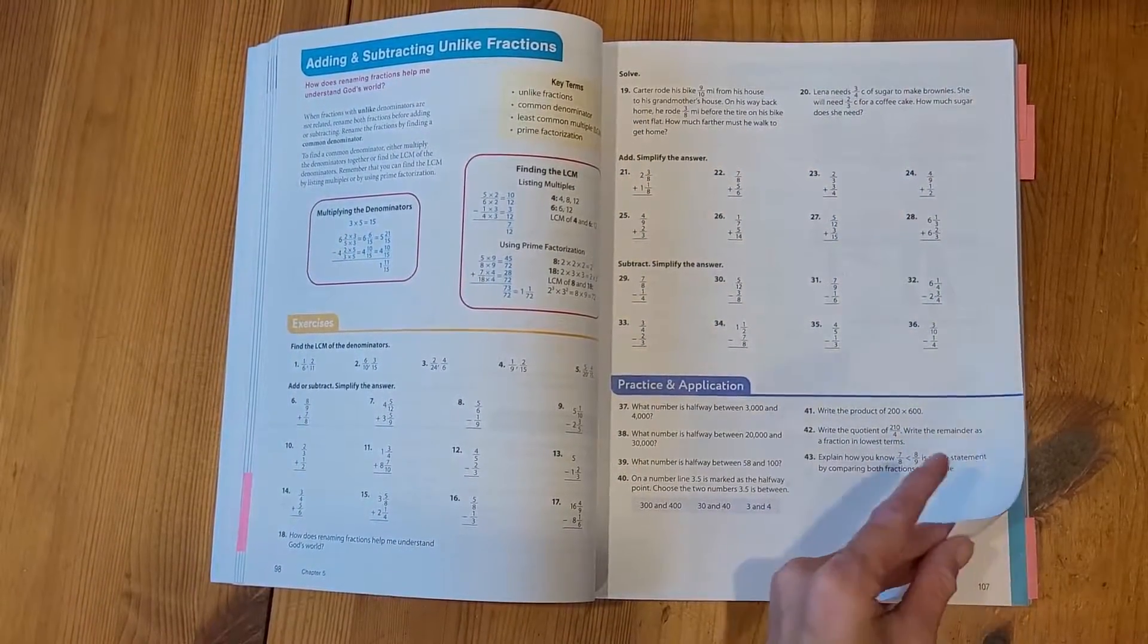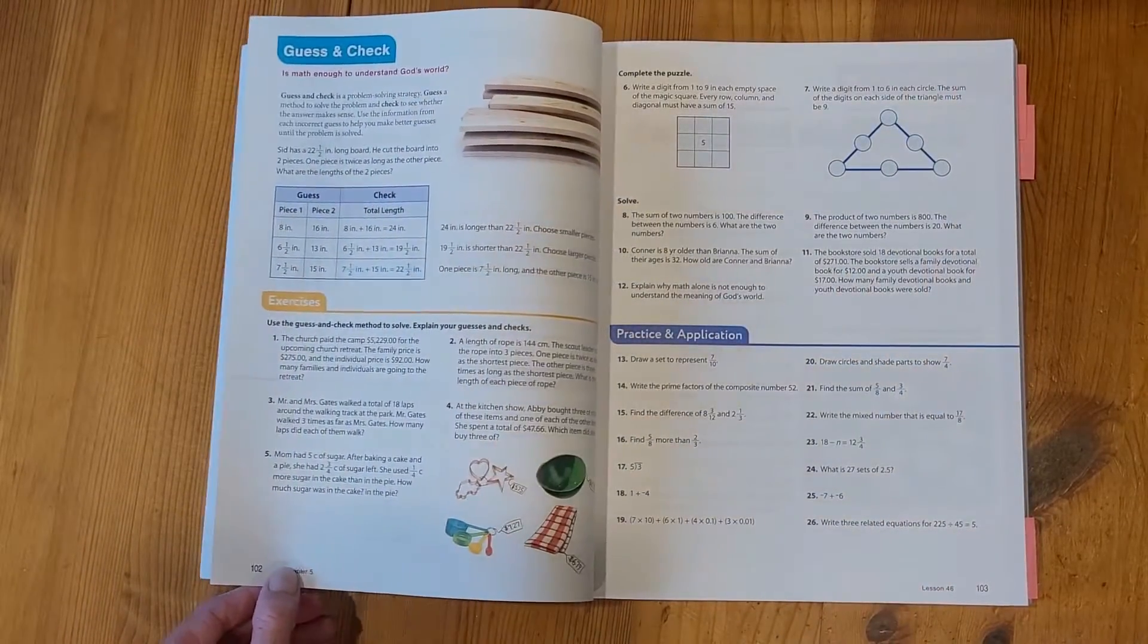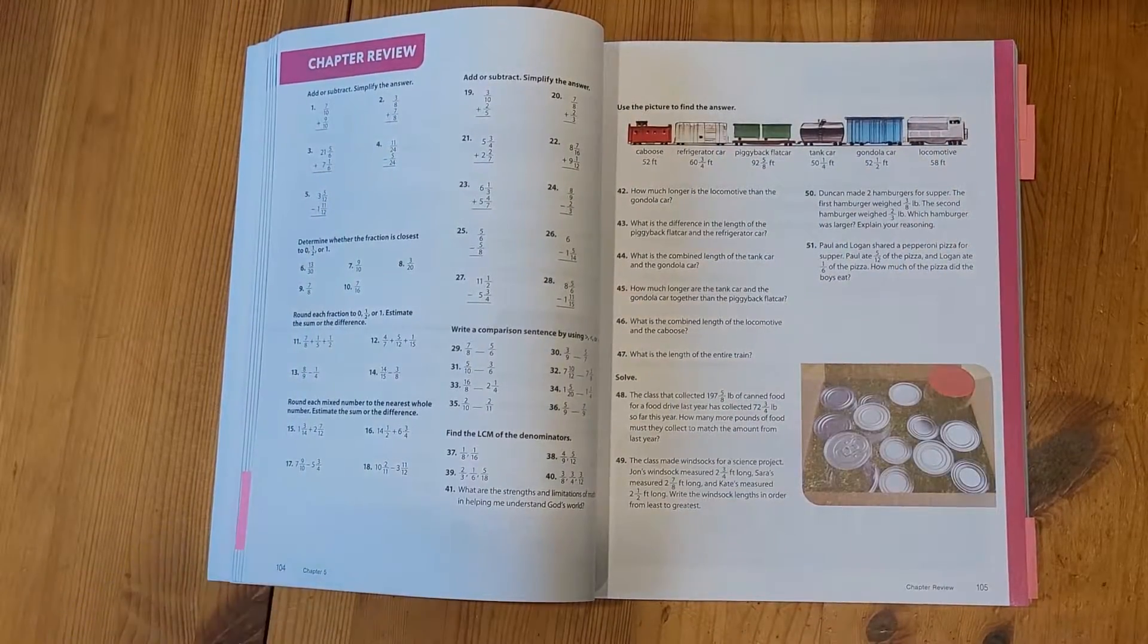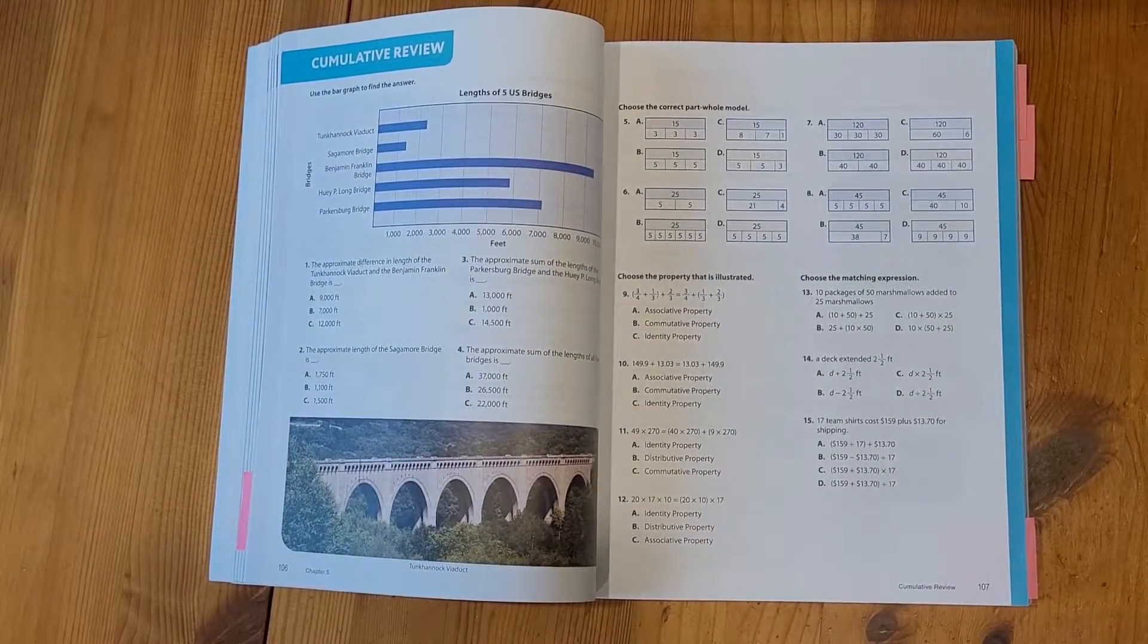So this is chapter 5. And here's the chapter review and the cumulative review at the end of the chapter.